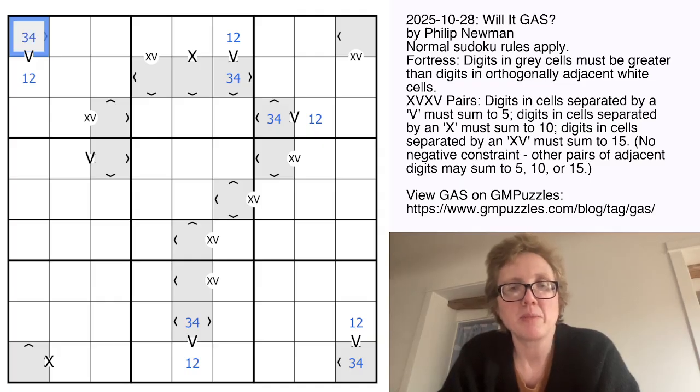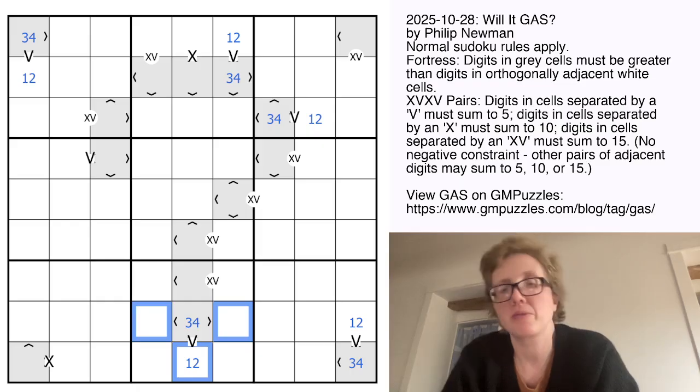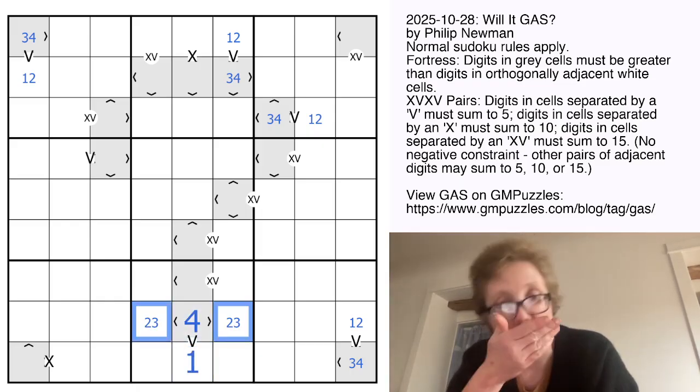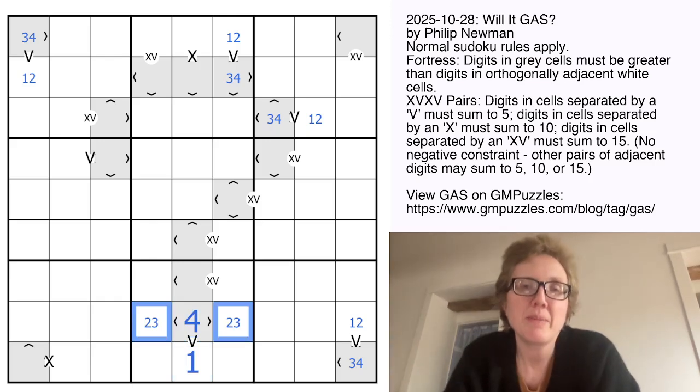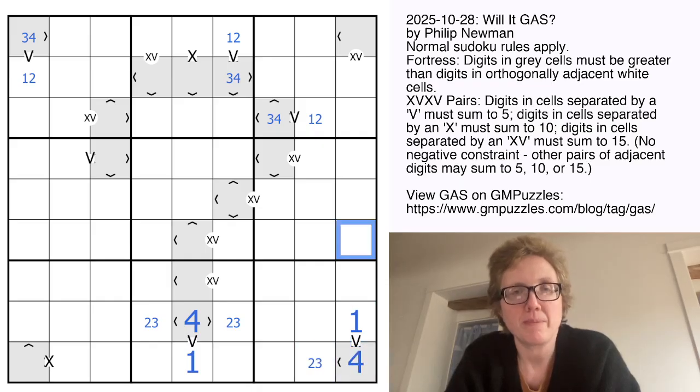Another one I want to look at a little bit more closely is this one. This Fortress cell can only be 3 or 4, and it has to be greater than all three of these. So in order to be greater than three digits, it must be a 4 and not a 3. And then these are going to be 2 and 3. Now that makes this a 1, which makes this a 4, and this is going to be 2 or 3. We can also mark the digits that are adjacent to these other low-valued Fortress cells as 1, 2, or 3, like that.